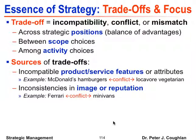A second source of tradeoff is inconsistencies in image or reputation. Consider a conflict between Ferrari and minivans — what would happen to the Ferrari image if they produced a minivan? Who would buy a Ferrari minivan anyway? If a company made a choice so incompatible with its image or reputation, it would confuse customers, employees, and suppliers.